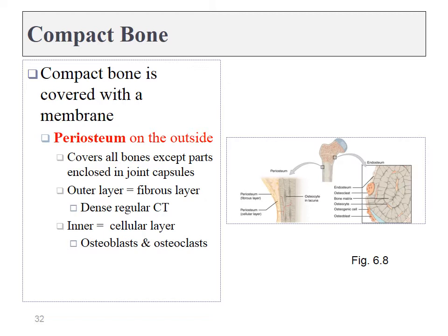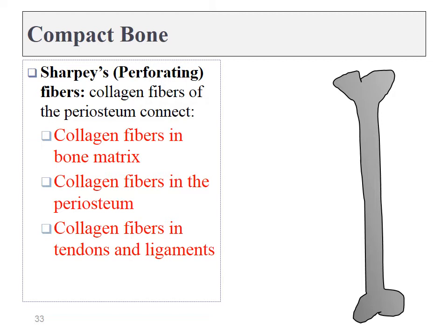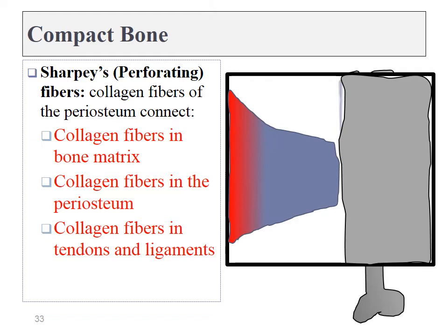Compact bone tissue is covered in a layer of connective tissue called the periosteum, which includes a lot of dense regular connective tissue with collagen fibers running back and forth, as well as bone cells — namely osteoblasts and osteoclasts. The periosteum surrounds the entire bone, but it also penetrates the bone tissue. Some of those collagen fibers go into the compact bone tissue — we call those Sharpey's fibers. Where a tendon attaches to a bone is therefore a very complicated and broad connection: the dense regular connective tissue of the tendon becomes the periosteum, and the periosteum has Sharpey's fibers which extend into the bone tissue.